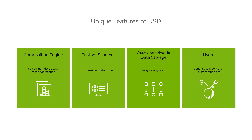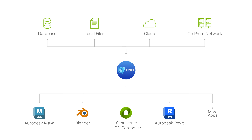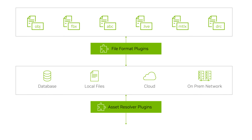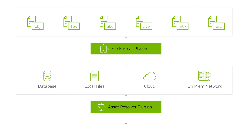The next key feature concerns asset resolvers and file formats. USD is entirely file system agnostic. The data isn't tied to file systems or any other persistent storage — it can even be procedurally generated. This is made possible by USD's plugin system for asset resolvers, such as Omniverse Nucleus, and file formats like Alembic and OBJ.